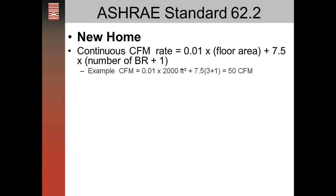An example of that is if you had a 2,000 square foot home: .01 times 2,000 times 7.5 times 3 plus one — the number of bedrooms plus one — and it comes up with 50 CFM.